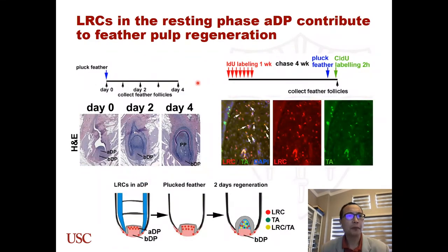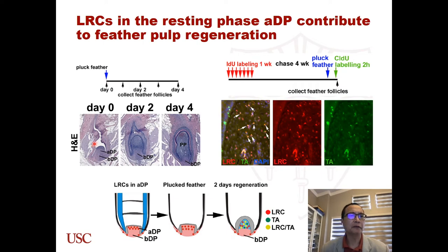Feather pulp is capable of regeneration. This panel shows a resting phase. When we pluck the feather, after two days and four days, the pulp gradually regenerates.